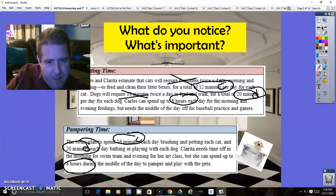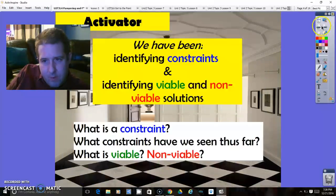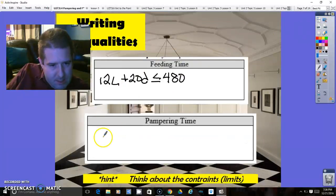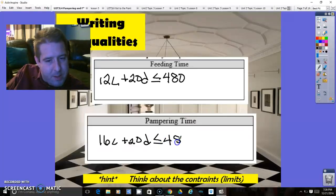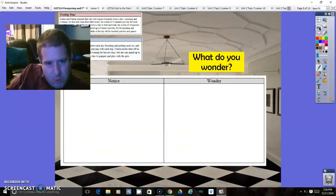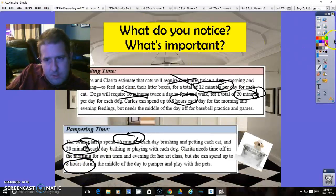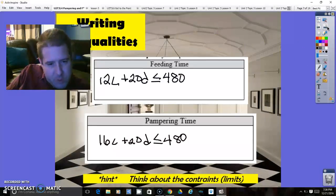And do the same thing for pampering time. Looks like it's 16 and 20, 16 for cat and 20 for dog. 16 per cat plus 20 per dog. So it looks like there isn't a whole big difference between those two. Also has to be less than or equal to 480 because it also said 8 hours as well. So we've got our two equations.